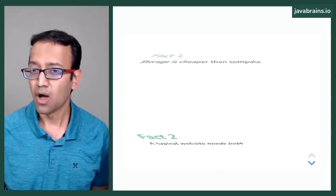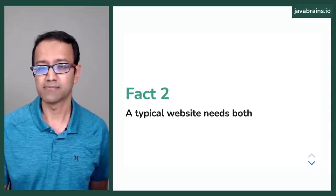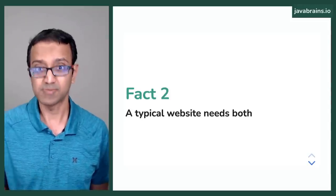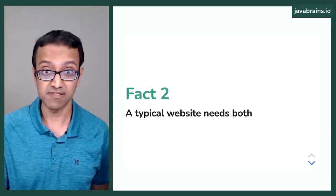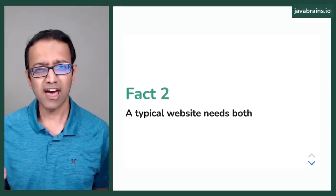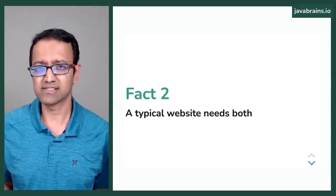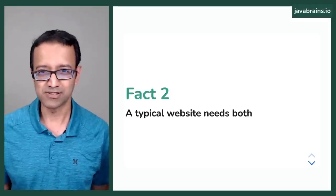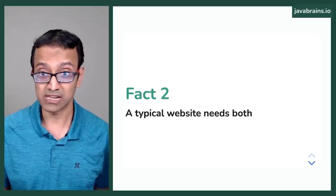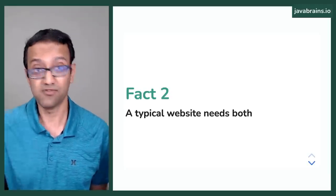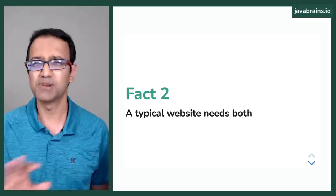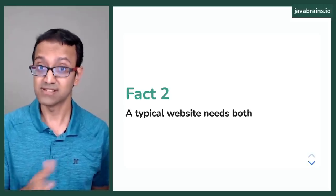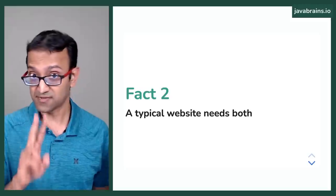Fact number two: hosting a typical website usually comprises of both storage and compute. Websites usually have some HTML, CSS, and JavaScript static assets that can be stored, and they also have dynamic assets - dynamic APIs that need to be computed. There are exceptions, but a vast majority of websites is a combination of storage and compute, the cheap and the expensive.